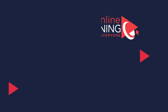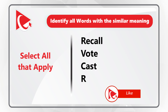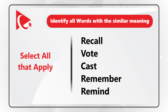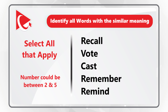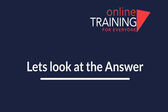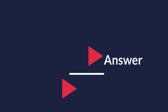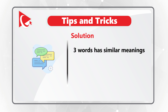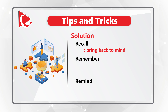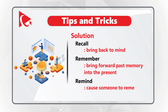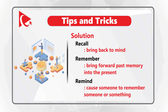Very frequently on the test you need to identify words with similar meaning. You're presented with five words: recall, vote, cast, remember, and remind. There are three words here with similar meaning: recall, remember, and remind. The word recall means to bring something back to your mind; remember means to bring forward past memory into the present; and remind means to cause someone to remember someone or something.